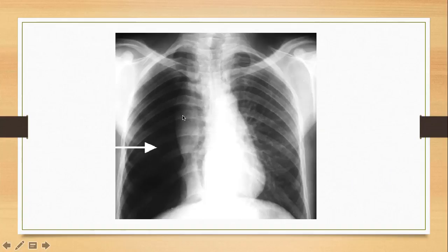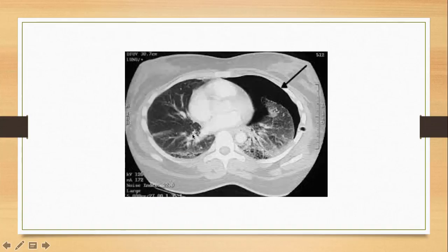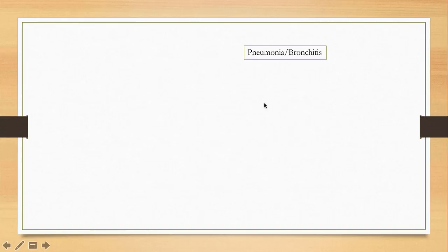This chest X-ray shows a huge amount of pneumothorax — the lung is collapsed. Here is a CT scan where the right-sided lung is basically collapsed.